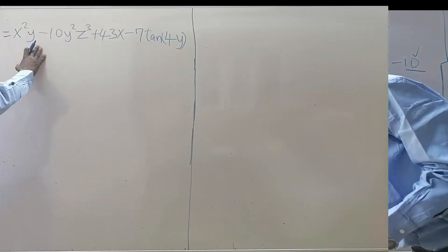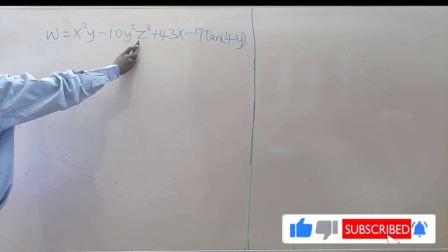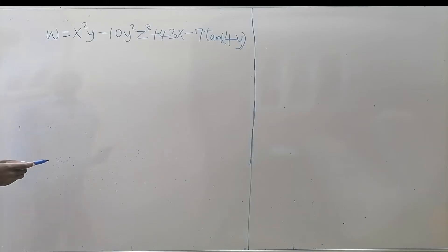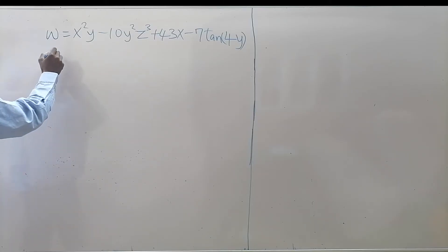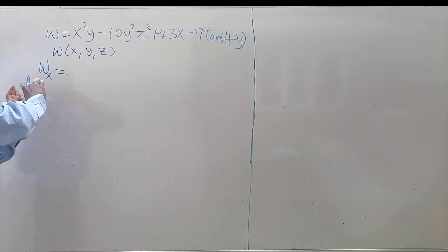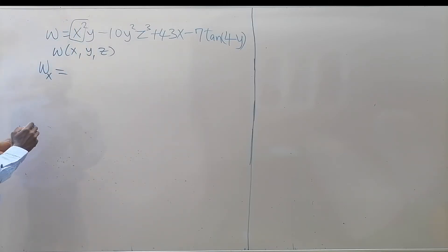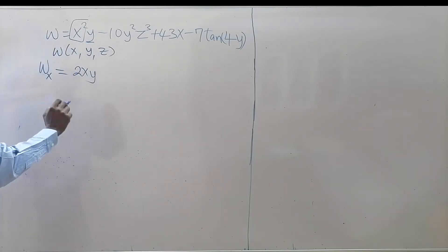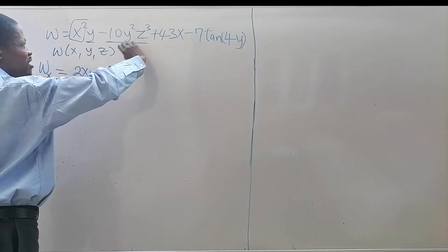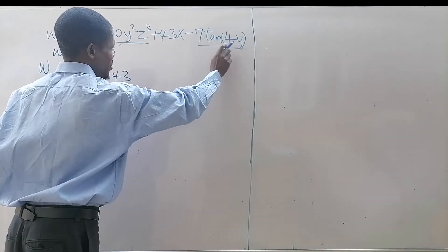The second example: w = x²y - 10y²z³ + 43x - 7tan(4y). We want to find the first-order partial derivatives, and in this case we have a function of three variables. For the partial derivative with respect to x, all other variables are kept as constants. We differentiate x², giving 2x, multiplied by y which is constant. There is no x in the -10y²z³ term, so that goes to zero. We get plus 43 for that term, and the last term has no x so it also vanishes. So w subscript x = 2xy + 43.